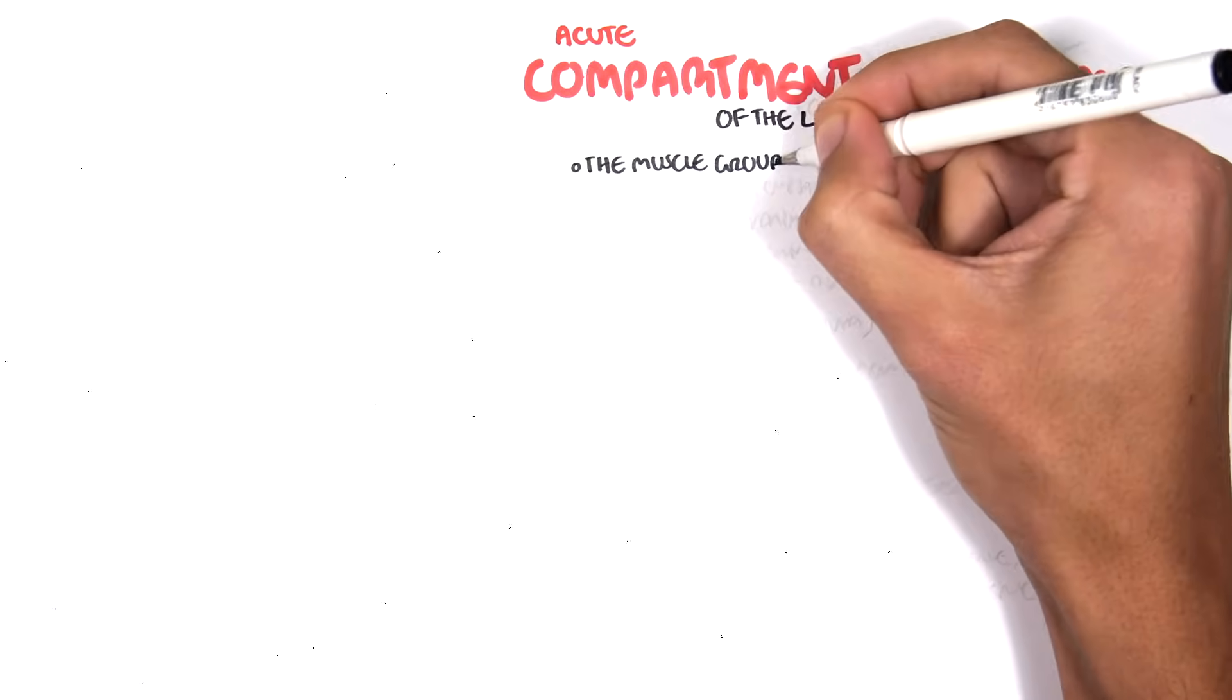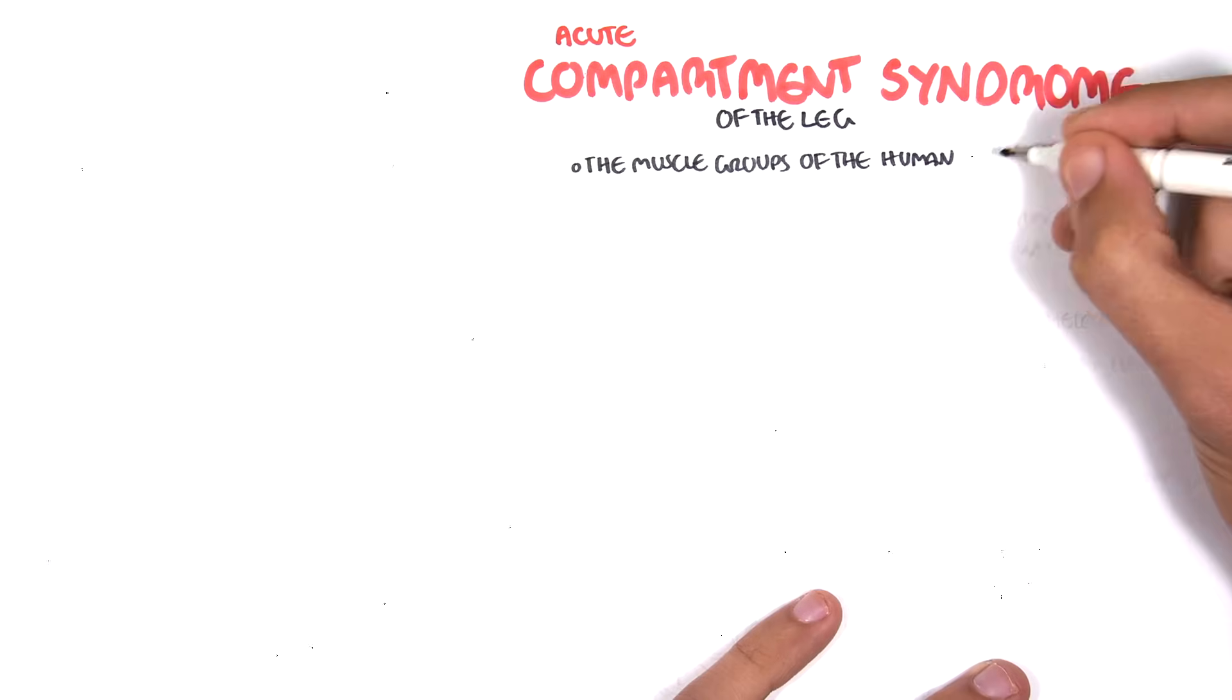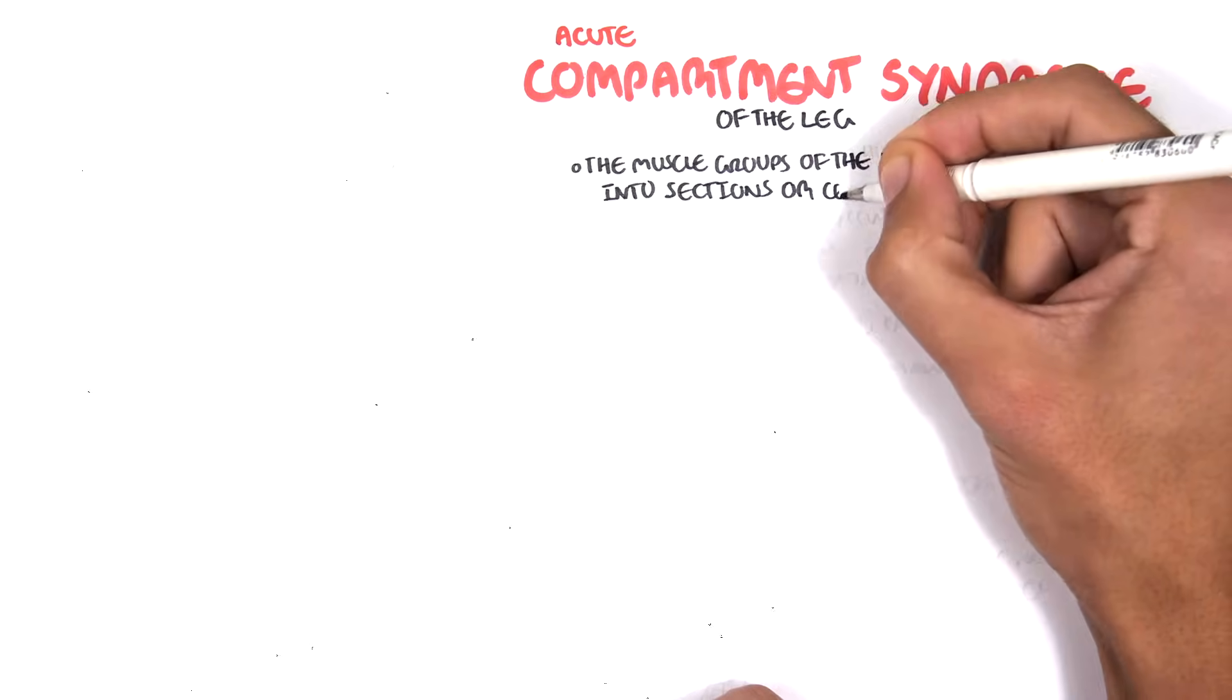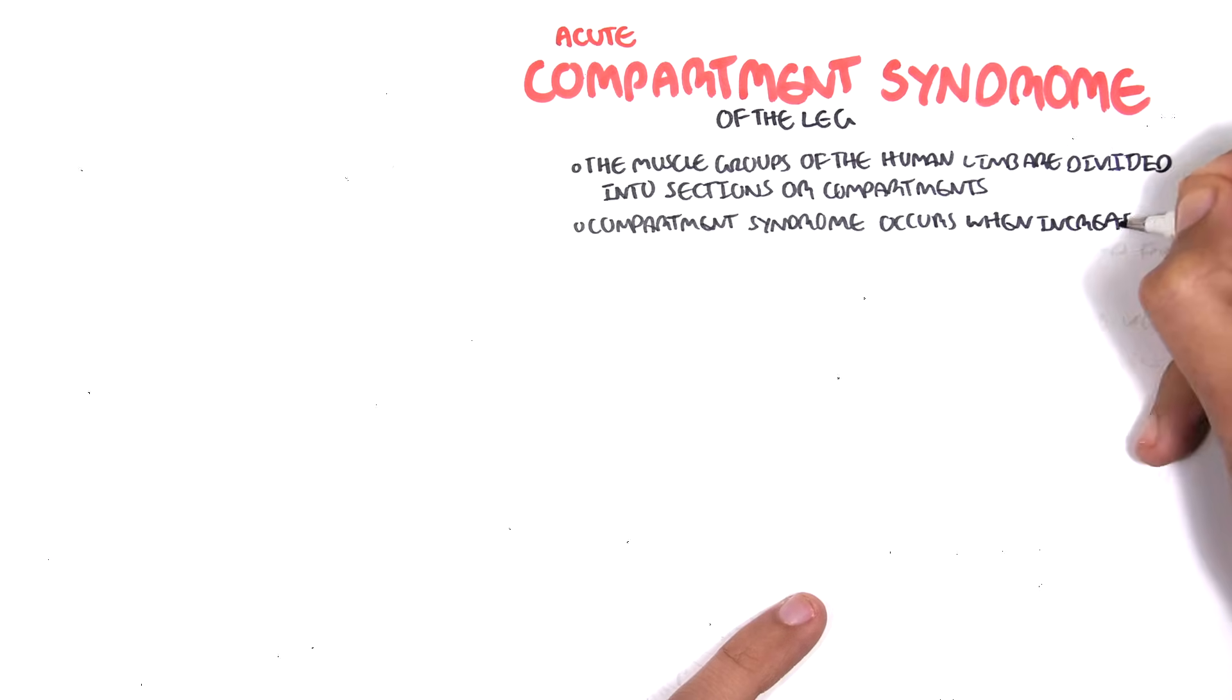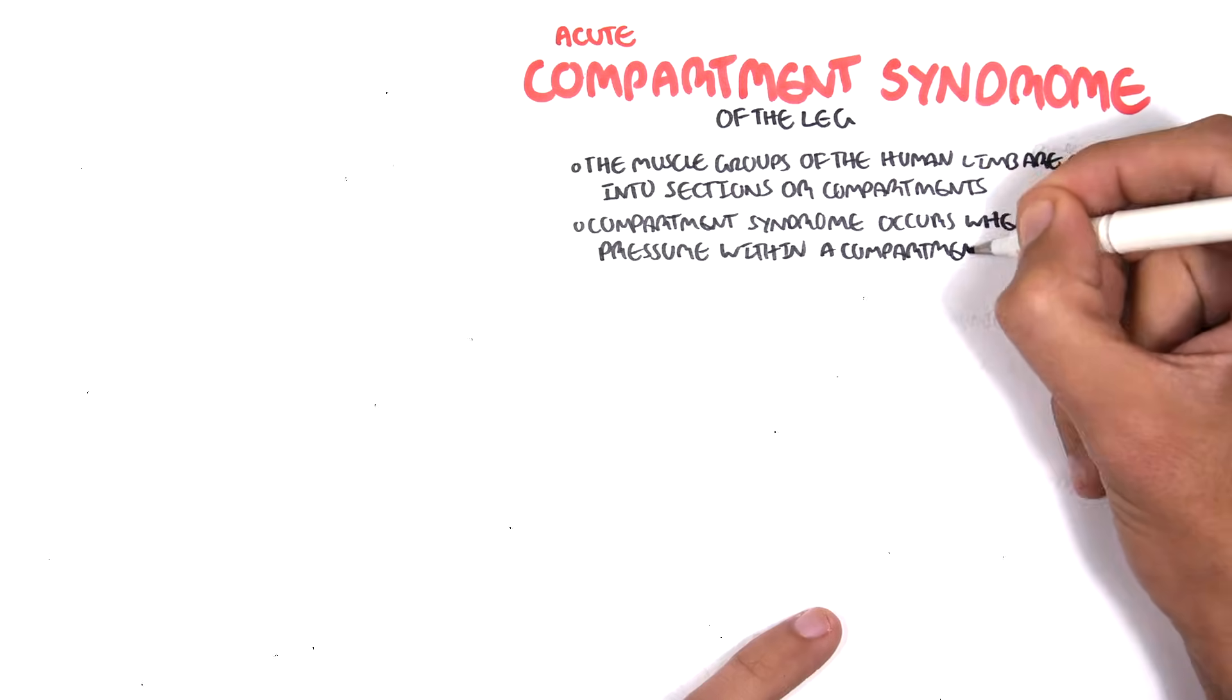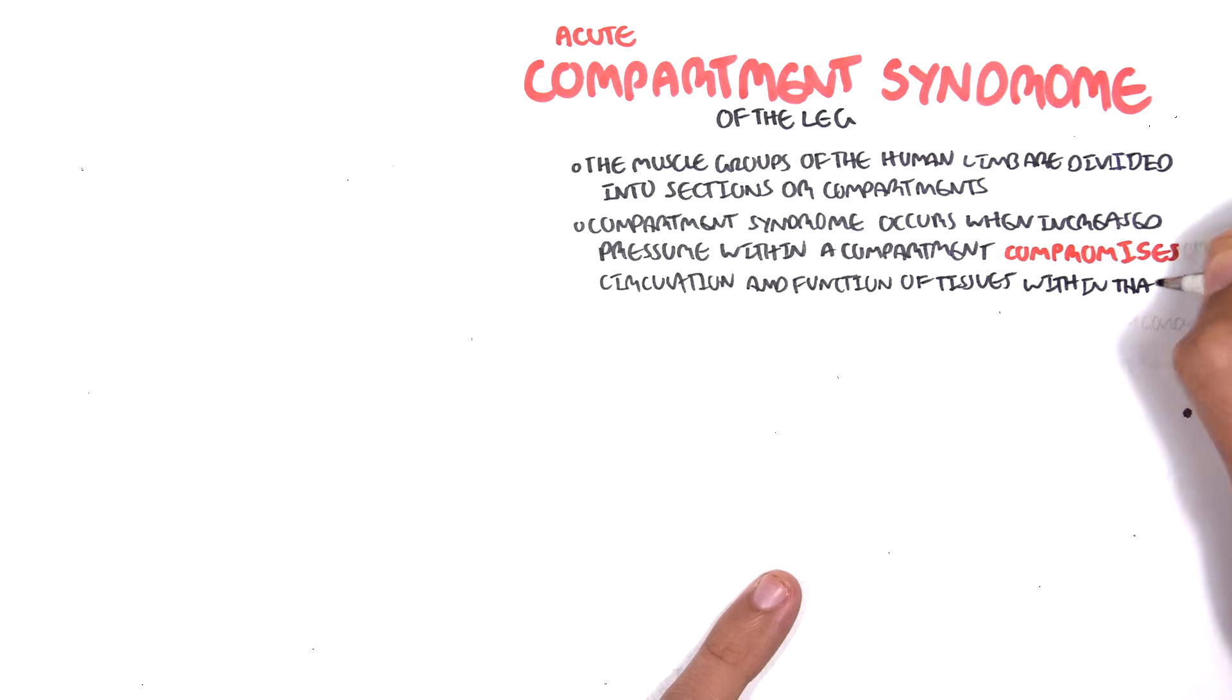Before moving on, it is important to know that the muscle groups of the human limbs are divided into sections or compartments. Compartment Syndrome occurs when there's an increase in pressure within a compartment which compromises circulation and function to the tissues within that area.